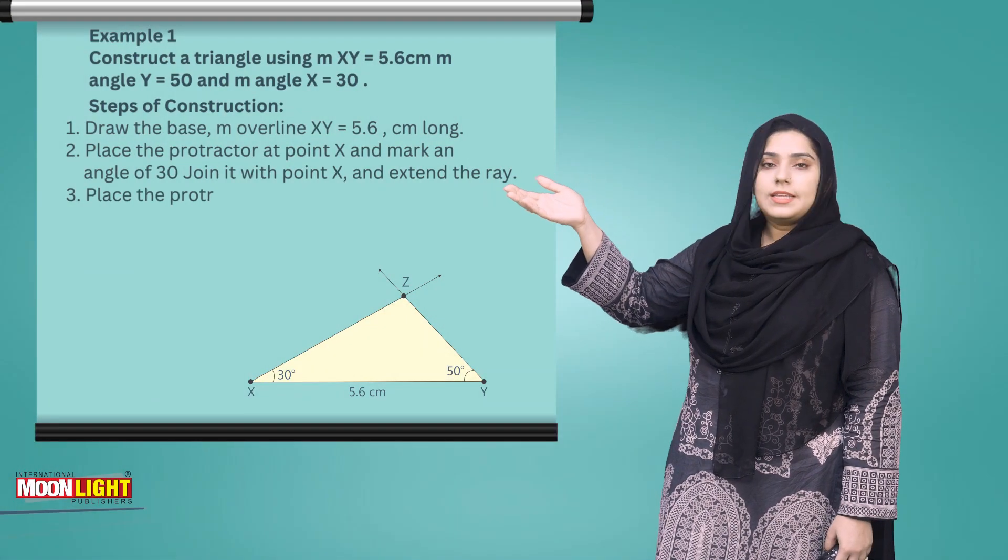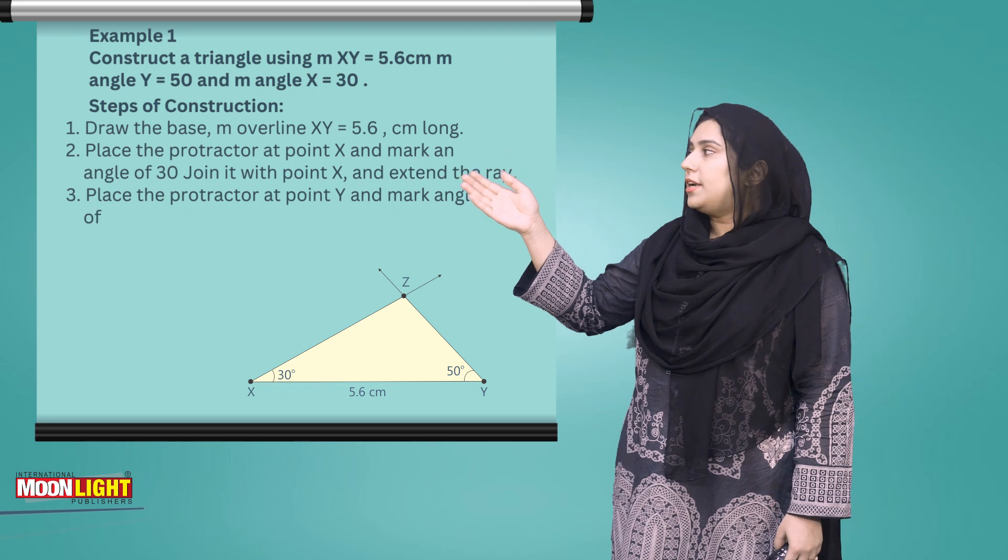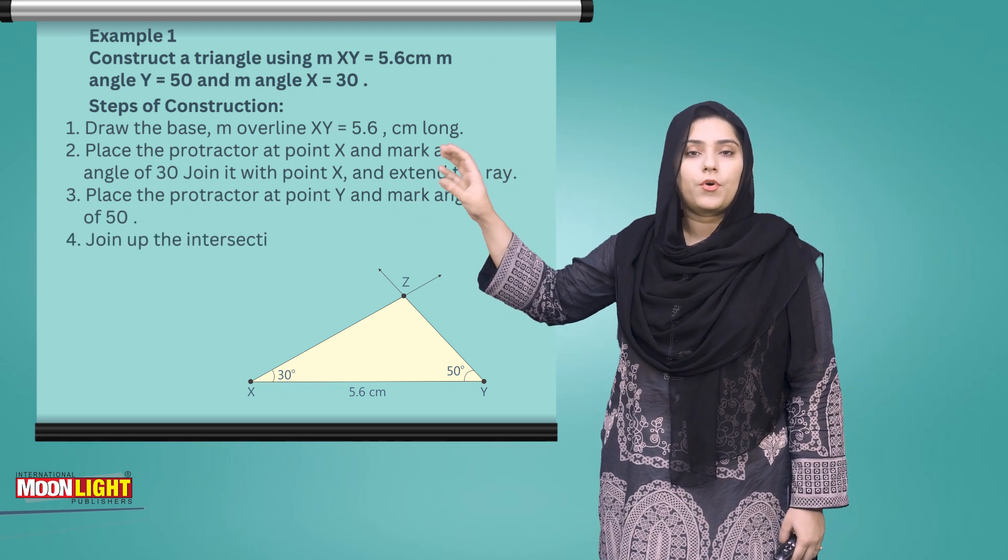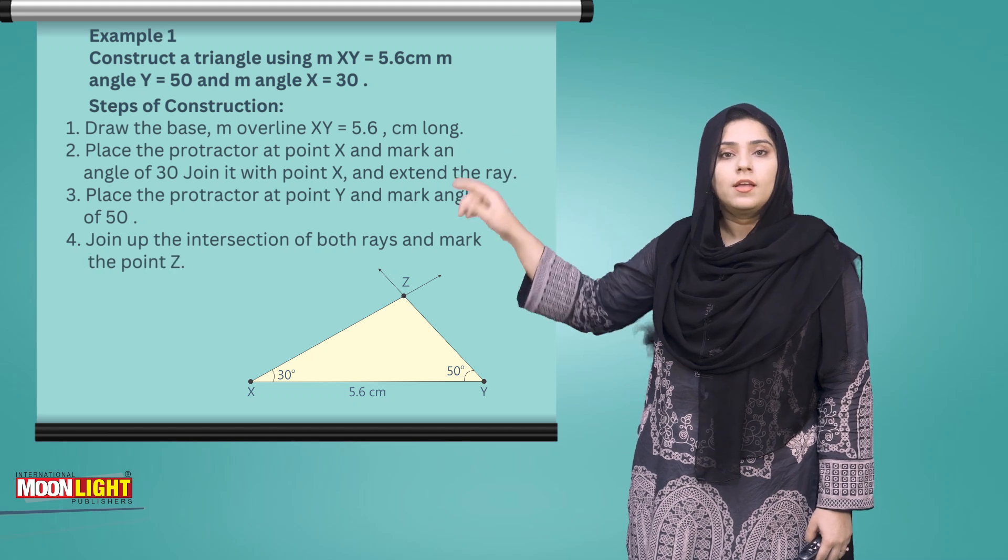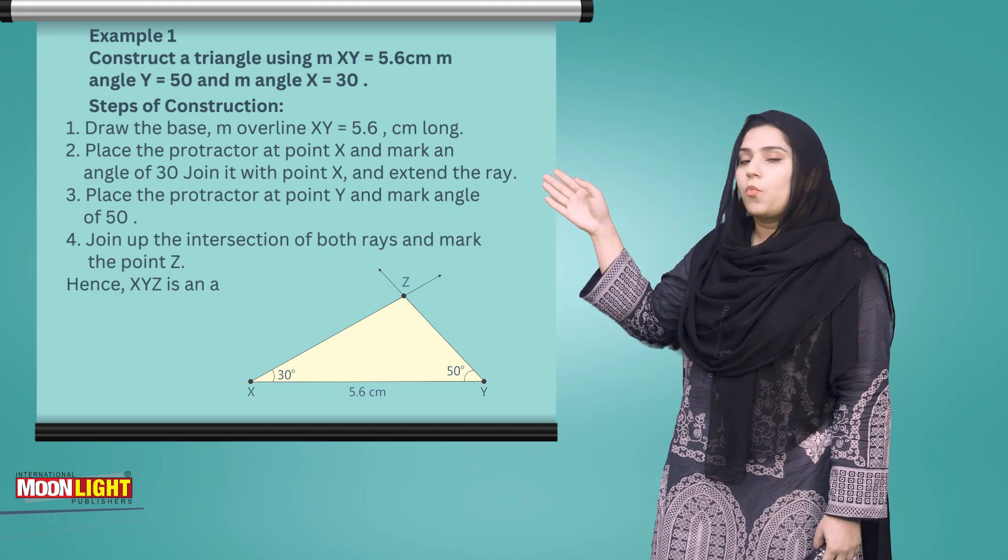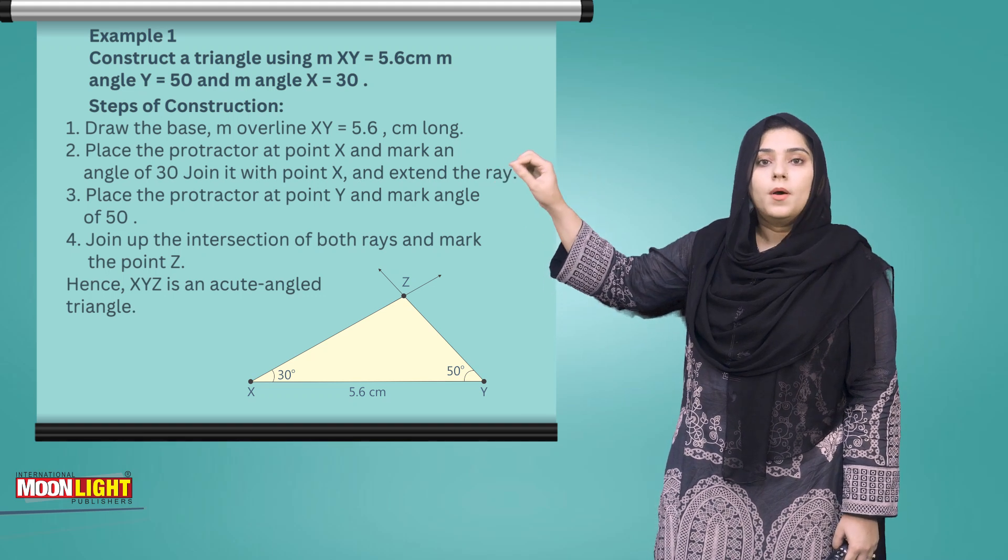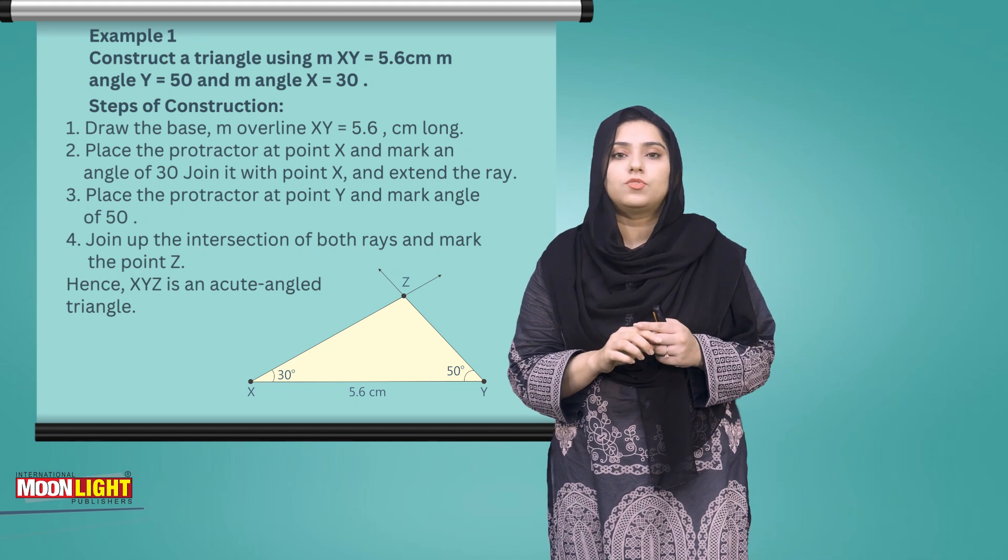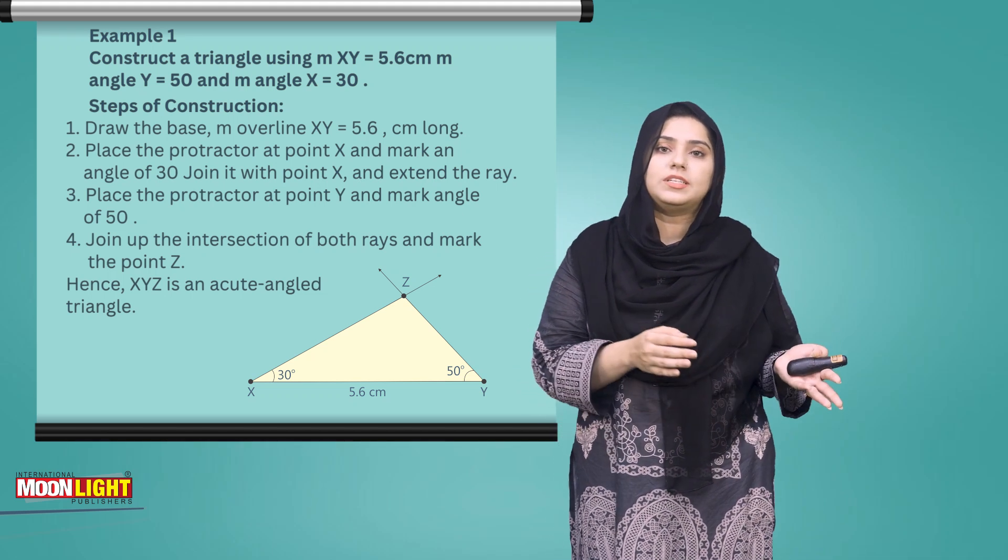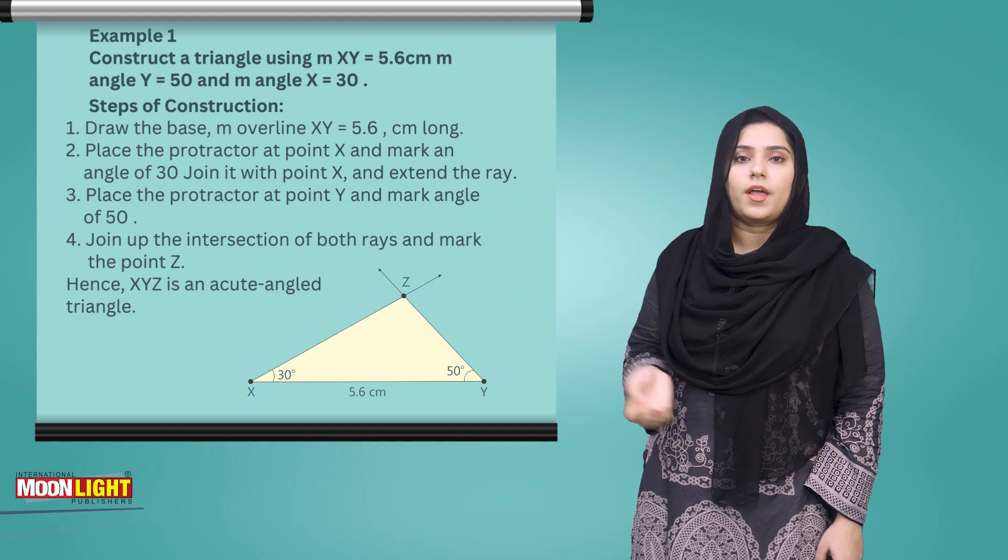So students, first of all, draw a line XY of 5.6 cm. After you have drawn the line, at point X construct a 30 degree angle. How do we do it? We will need a protractor, and where 30 degrees is marked, we draw a line. After that, at point Y construct a 50 degree angle. These two lines will intersect, and we will call the intersection point C. So, you have drawn an acute angle triangle.